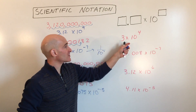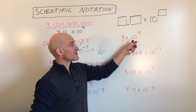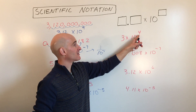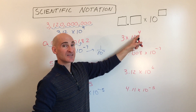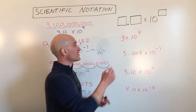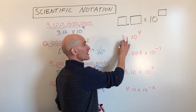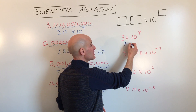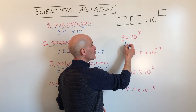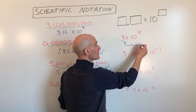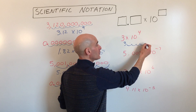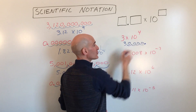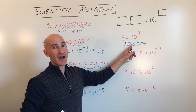Now let's go the other direction — converting from scientific notation back to standard form. Here we have a scientific number; 10 to the 4th tells us this is a really large number. We move the decimal point four places to the right, adding placeholder zeros, and get 30,000.